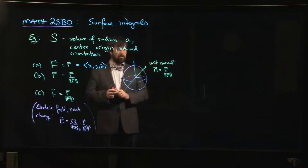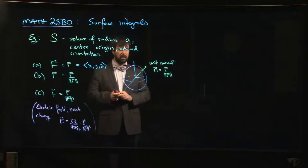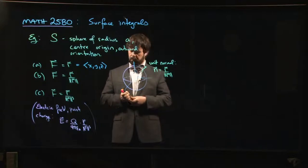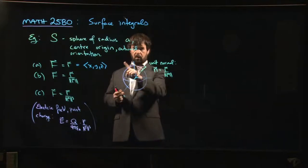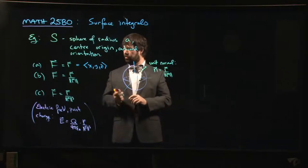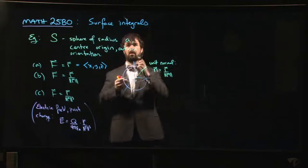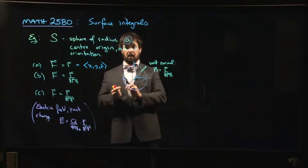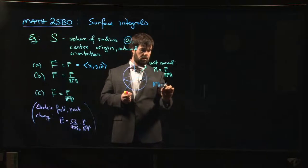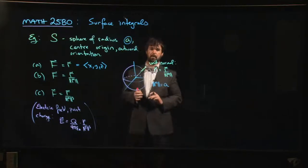There's one more simplification you can make here. The vector r is not constant—it varies from point to point as we move around the sphere. But its magnitude is constant because we're on a sphere of radius A. So the magnitude of r everywhere is equal to A.